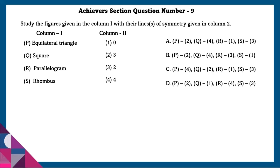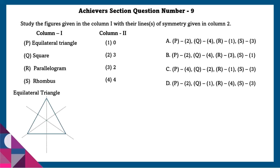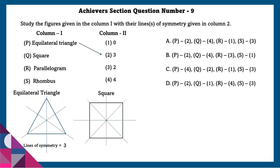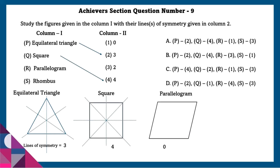Achiever section question number 9: Study the given figures in column 1 with their lines of symmetry in column 2. An equilateral triangle has all sides equal and has 3 lines of symmetry. A square has 4 lines of symmetry. A parallelogram has 0 lines of symmetry. A rhombus has 2 lines of symmetry.